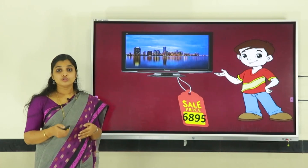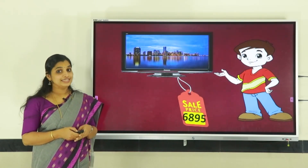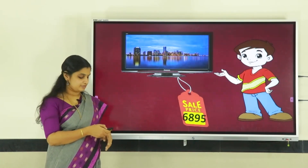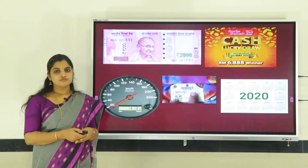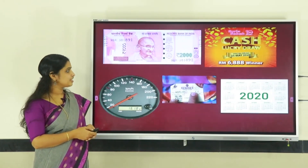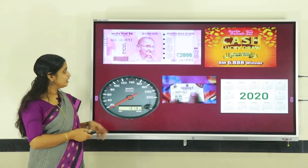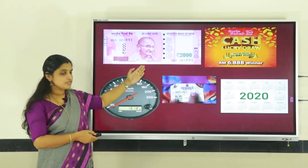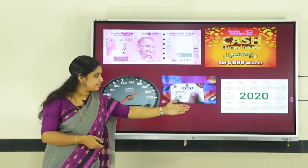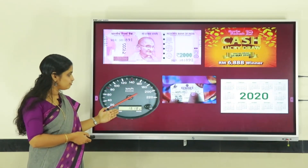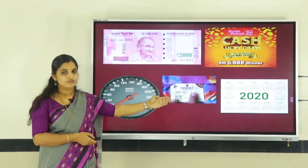So like Rohan, you also will be curious to know about four-digit numbers. You might have noticed four-digit numbers in things we see and use in our day-to-day life. Here you can see examples: a two thousand rupee note, a year written on the calendar, the odometer of a car, and a price tag on a sari.